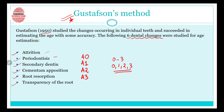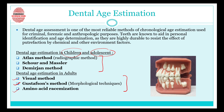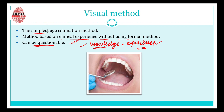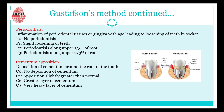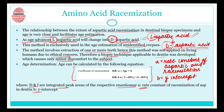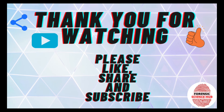To summarize, the methods used for dental age estimation in adults are: the visual method, Gustafson's method — discussed in detail in a previous video — and the amino acid racemization method. Thank you for watching.